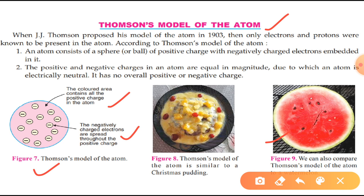According to Thomson's model, the mass of an atom is considered to be uniformly distributed. However, Rutherford's experiment showed that all the mass of an atom is concentrated at its center — at the nucleus. These two were the main limitations of Thomson's model, though it is a very simple representation of an atom.